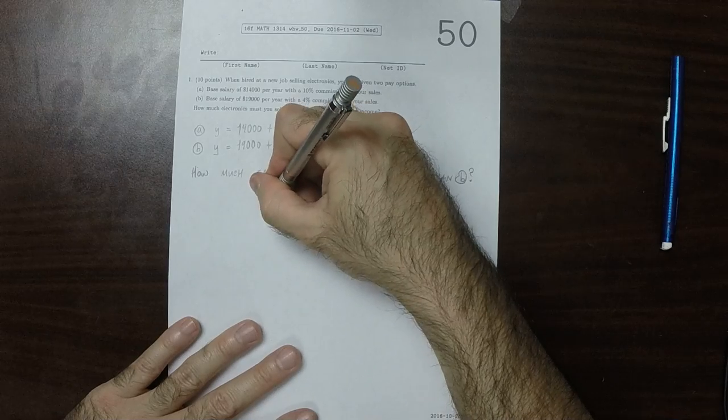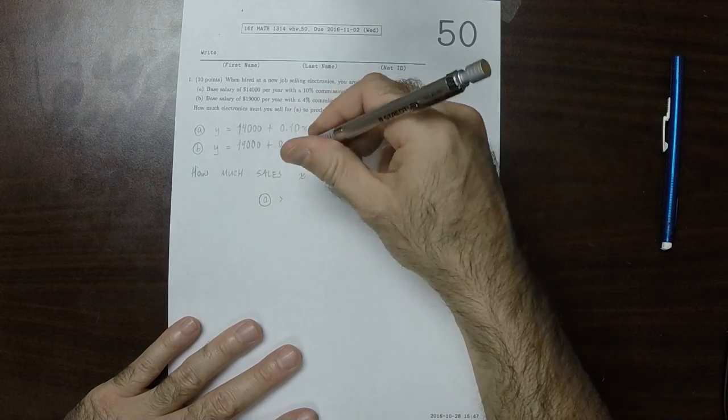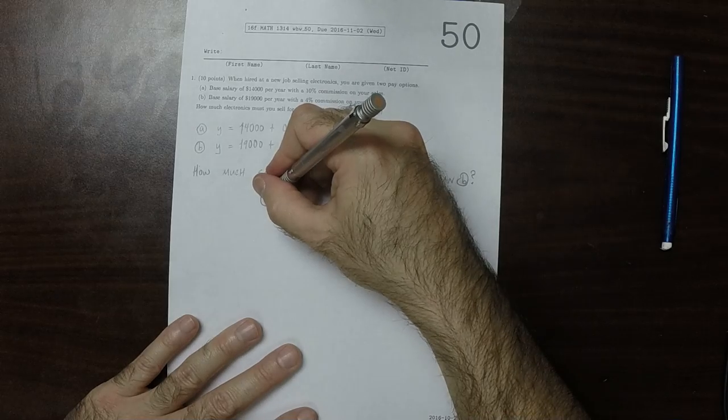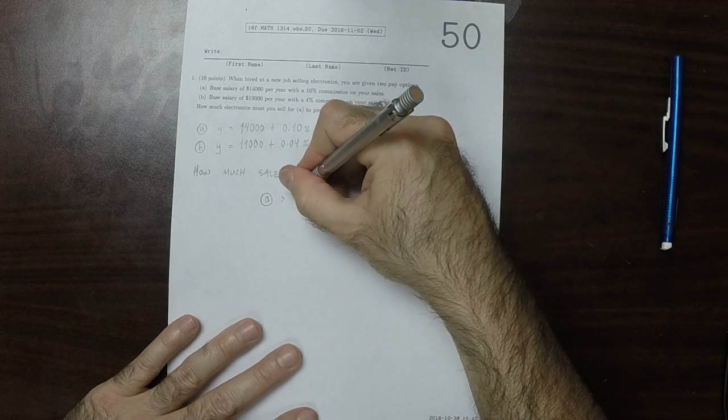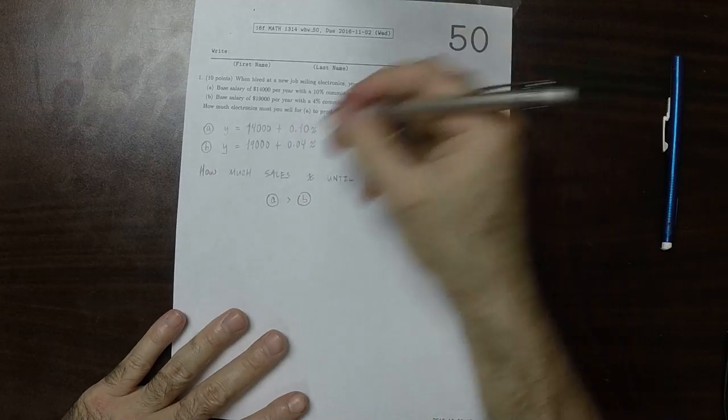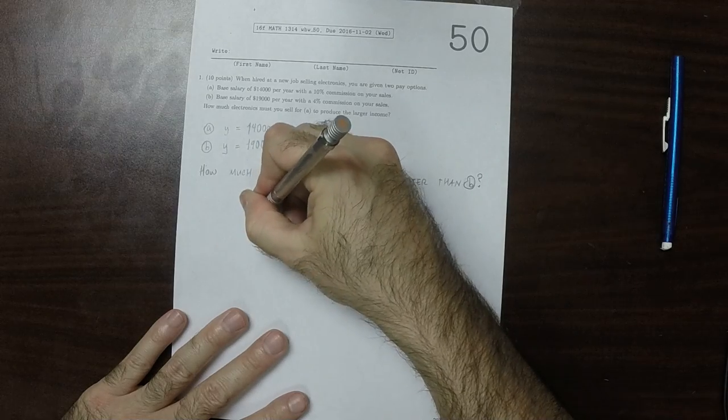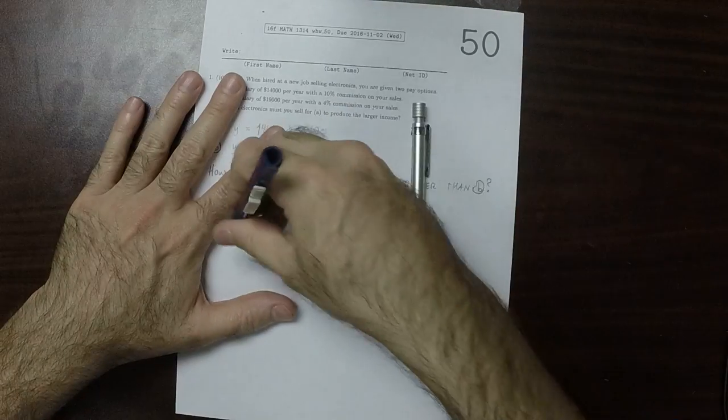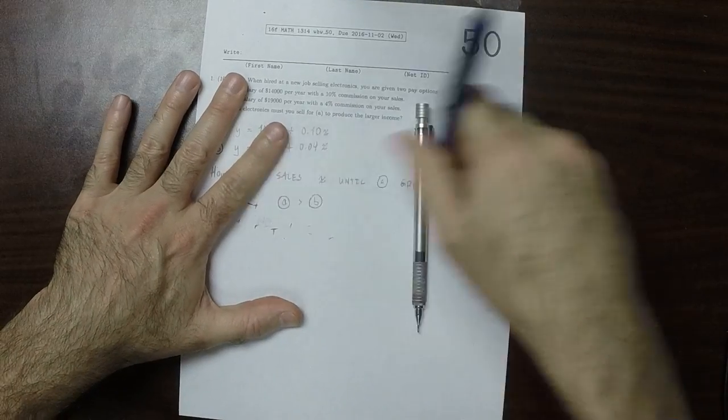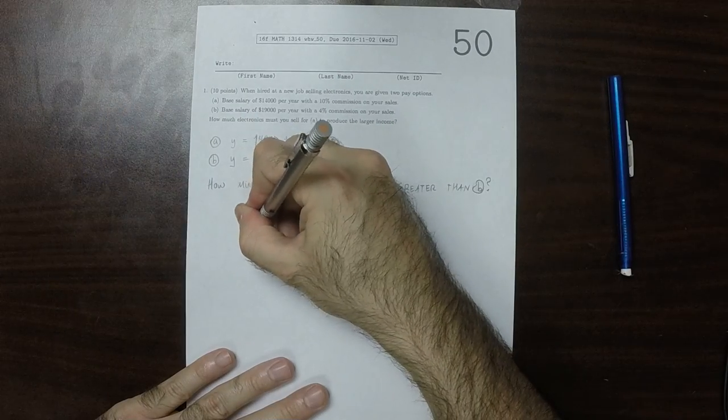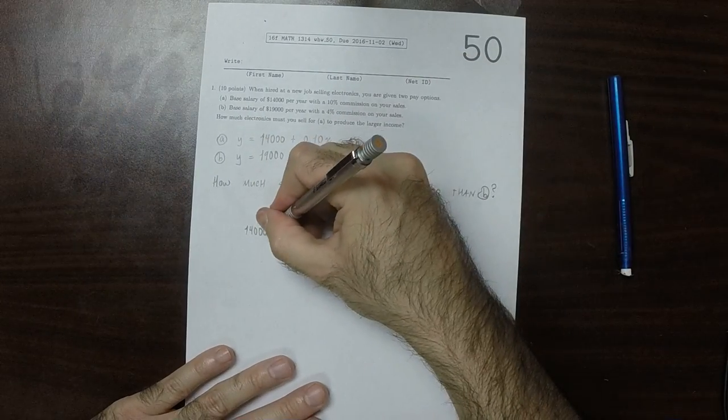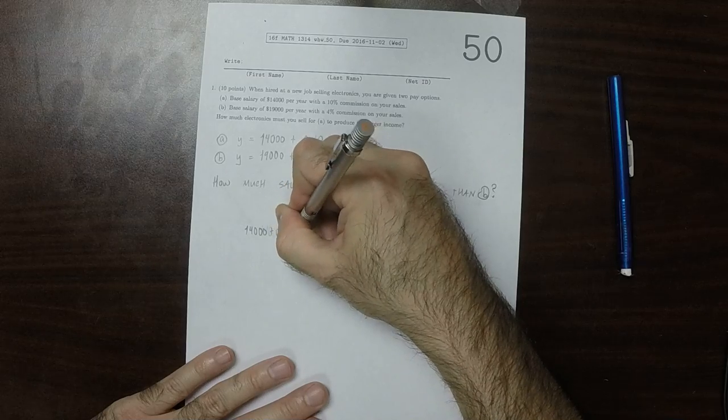Well, in sort of an abusive notation, a greater than b, that's 14,000 plus 0.10x greater than 19,000 plus 0.04x.